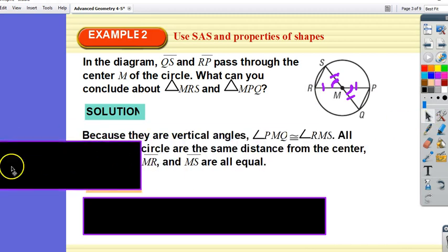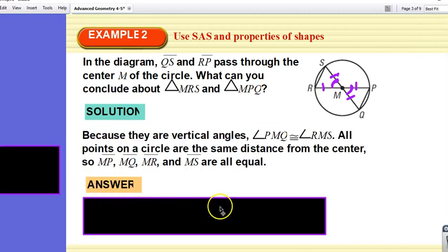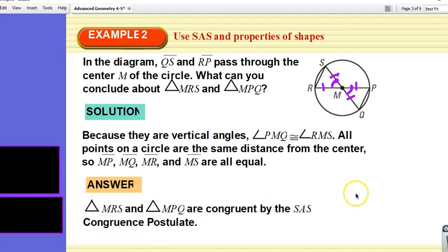I have side, angle, side. The two triangles are congruent. Make sense?